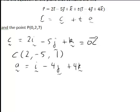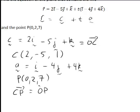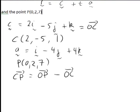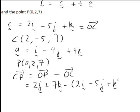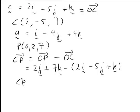Since we have point P with coordinates (0, 2, 7) and point C with coordinates (2, -5, 1), we can get a second vector lying on the plane by computing the vector from C to P, which is OP minus OC. The position vector of P is 2j plus 7k, and of C is 2i minus 5j plus k.